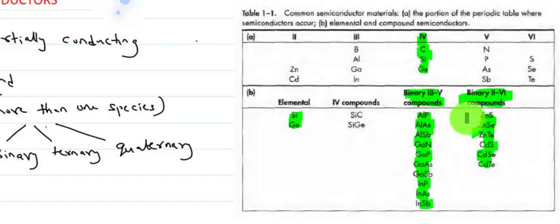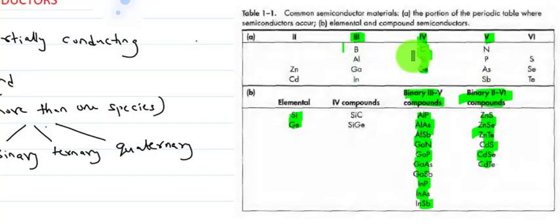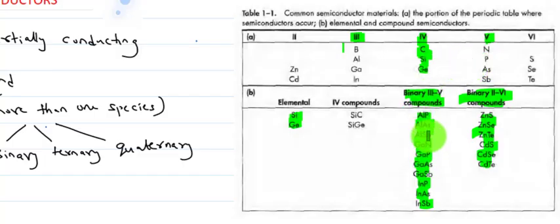These binary compound semiconductors are formed by group 3 and group 5 elements together to form binary 3-5 compounds. The octet combination will be three plus five or two plus six. Binary 2-6 compounds are formed by elements like zinc and cadmium combined with group 6 elements such as sulfur, selenium, and tellurium. These are the examples for binary compound semiconductors.